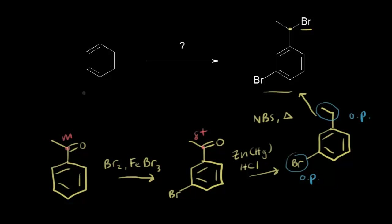Finally, I have to go from benzene to this molecule with the acyl group. I can do that with a Friedel-Crafts acylation reaction. I would need two carbons, so for my acyl chloride, I need to make sure I have two carbons. My catalyst would be aluminum chloride for this Friedel-Crafts acylation.